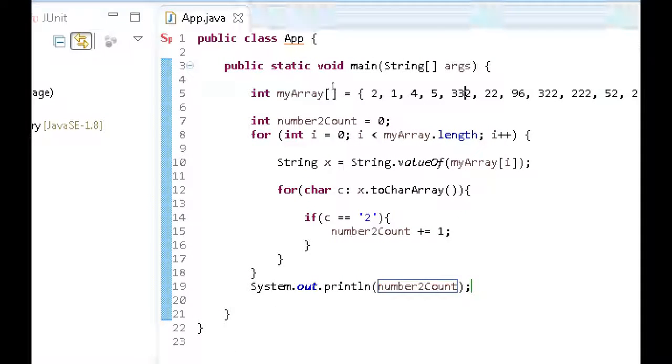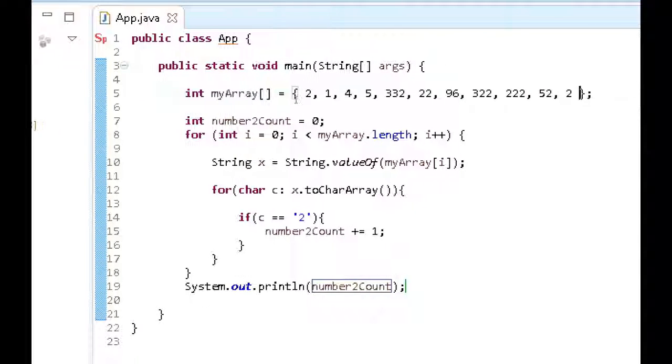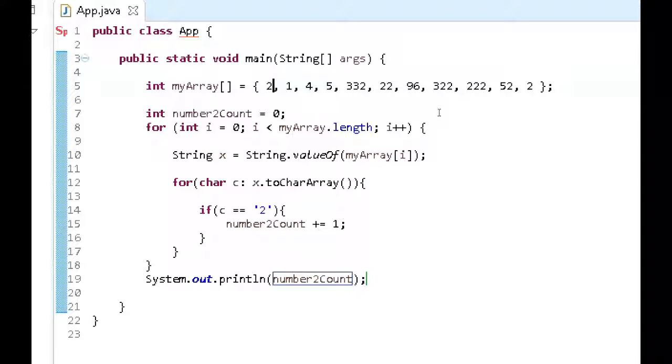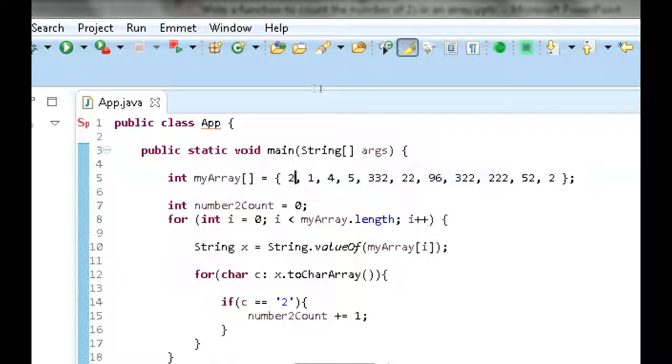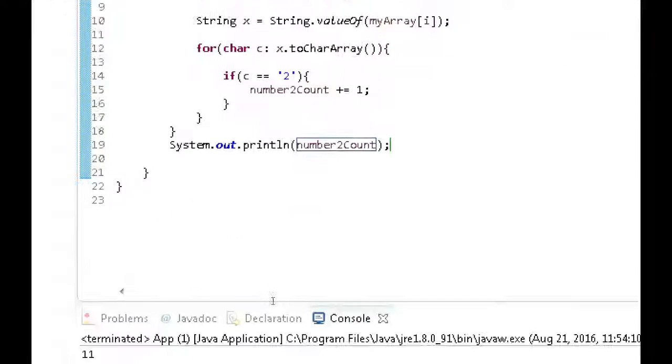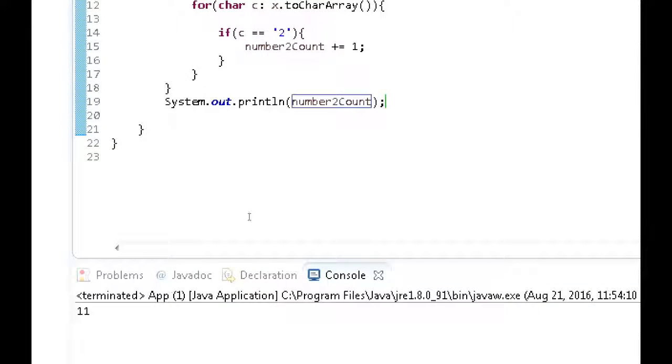We got 1, 2, 3, 4, 5, 6, 7, 8, 9, 10, 11. So we have eleven twos, which is exactly what we're expecting down here.